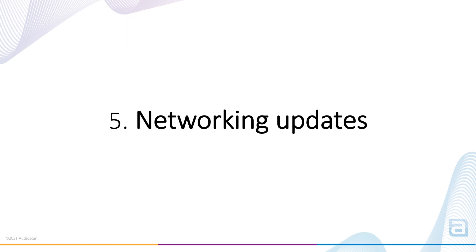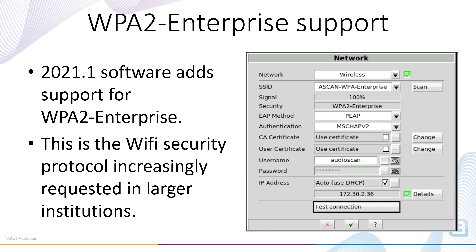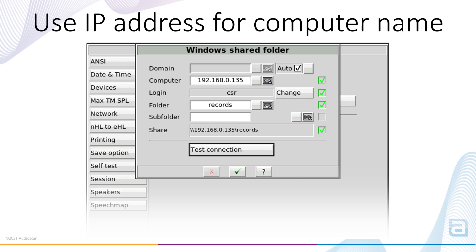Networking updates. The first network change will be of particular interest to IT professionals in larger institutions: the Verifit 2 has now added WPA2 Enterprise to the list of available Wi-Fi security schemes that are supported. This is an important change with the increasing usage of wireless connections in hospitals and other high-security networks. The second change is a small tweak providing increased convenience for anybody who sets up a Windows shared folder for print-to-file or session saving. Previously, setup required entering the computer name where the target folder resides; this can now be substituted with the IP address of the PC, allowing for a faster, more hassle-free setup and is much more reliable on a wider variety of network configurations.